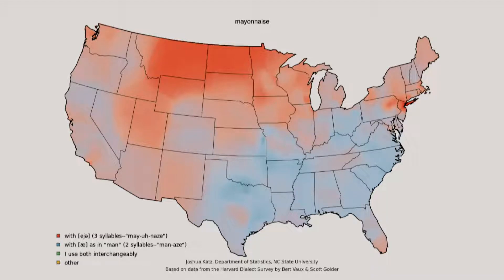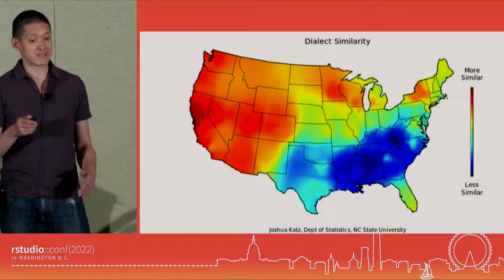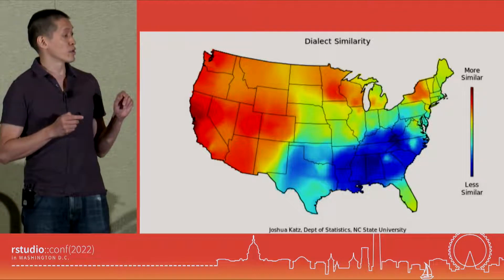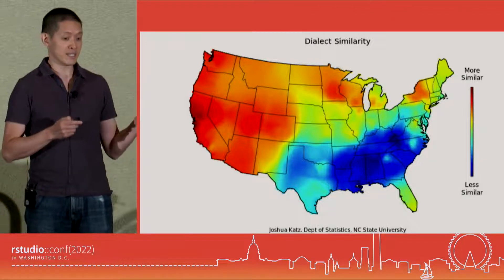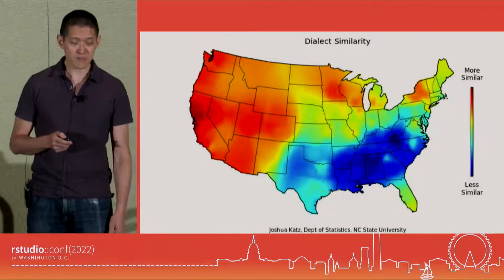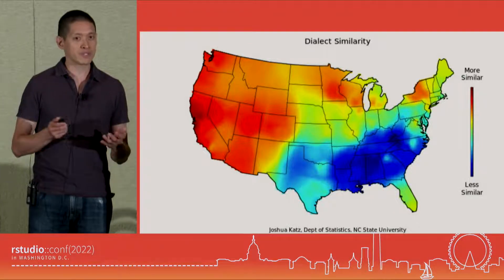You'd answer a lot of these questions, and at the end it would generate a map for you showing how similar your personal dialect is to regional dialects in the United States. This isn't my map, but it's actually pretty close to me. The red is where your dialect is more similar to the regional dialect — in this case, more similar to Northern California — and blue is where it's least similar. These maps were all generated dynamically, and that was a little bit computationally expensive.